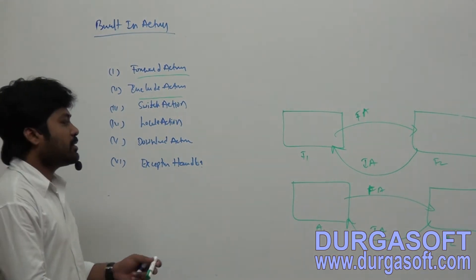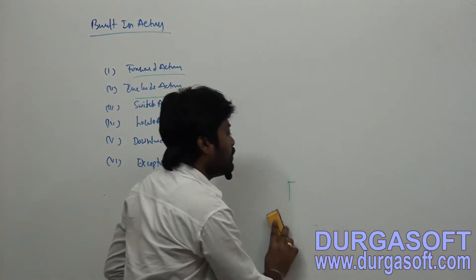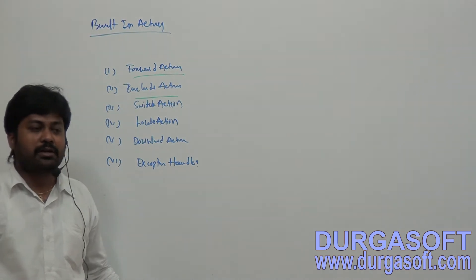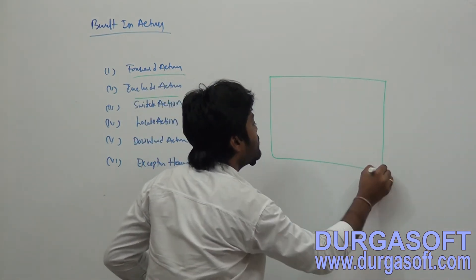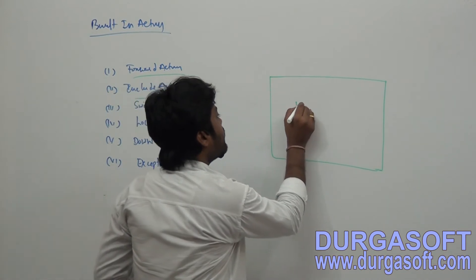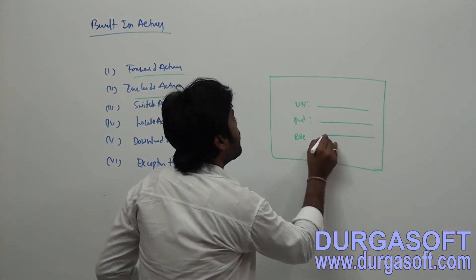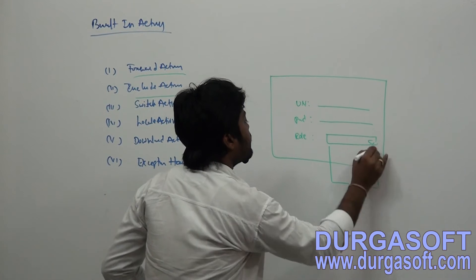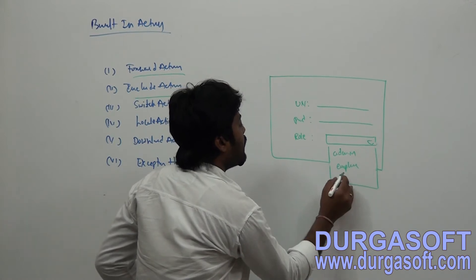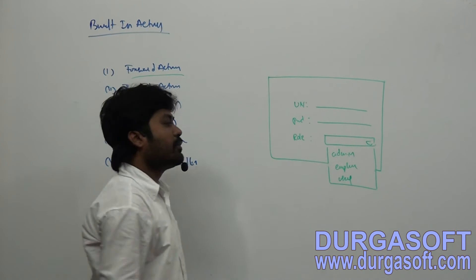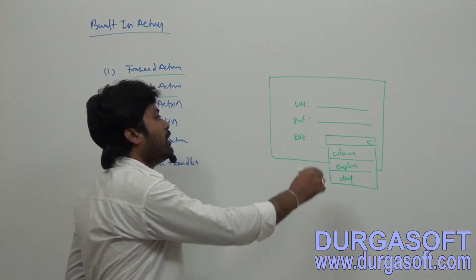Consider a login use case: after logging in, if you are an employee you need to redirect to the employee module, if you are an admin to the admin module, and if you are a student to the student module. So if you have a common login page for all users with fields for username, password, and role — with roles being admin, employee, and general user.